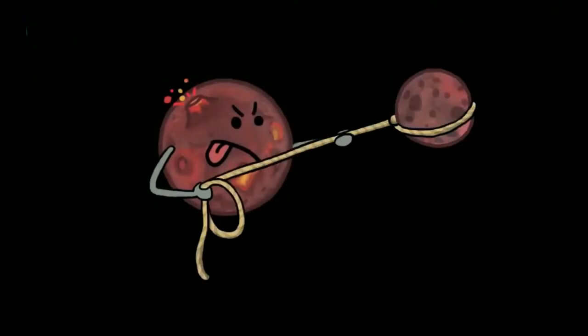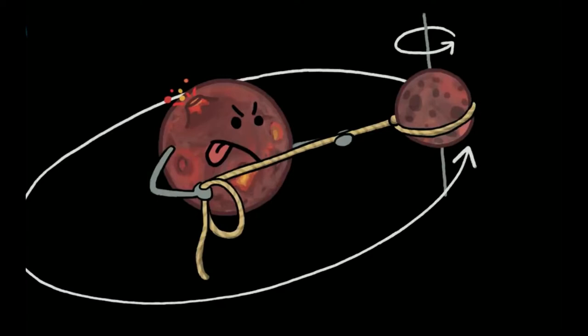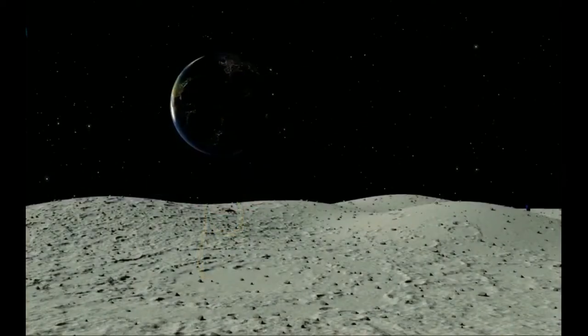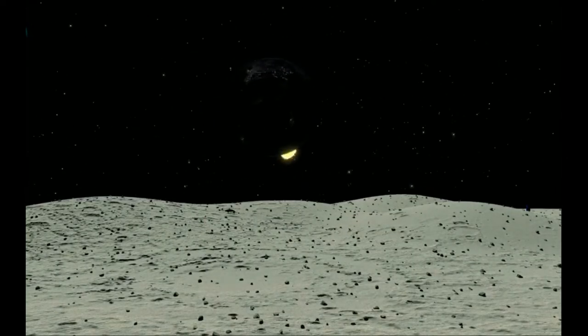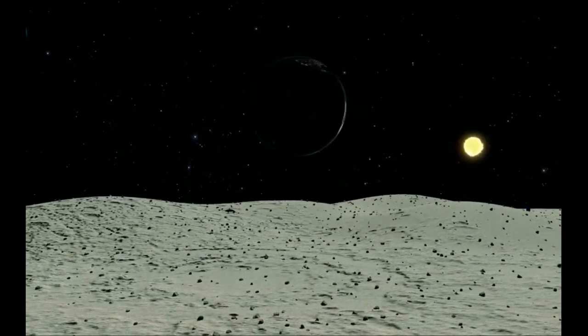Tidal locking is the name given to the situation when a Moon or planetary object's orbital period matches its rotational period. Coincidentally, it is the same fate that affects every single large Moon orbiting a planet. A great example of this is our own Moon.